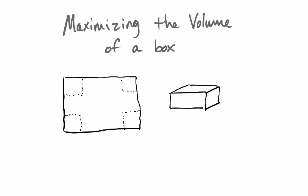I want to create a box that would have a maximum volume. Based off of something that has a certain length and a certain width and what you cut out — when you think about folding up a side, this would be the height, then this would be the length, and then this part is the width. The volume would equal length times width times height.